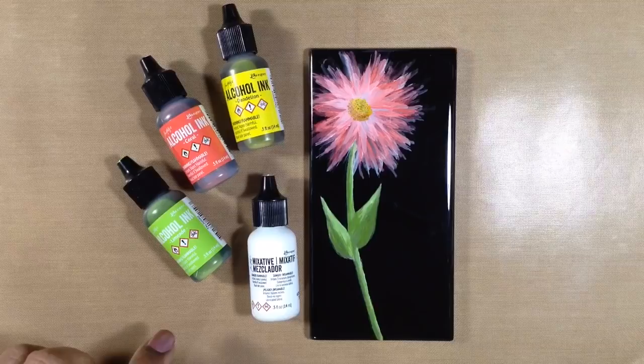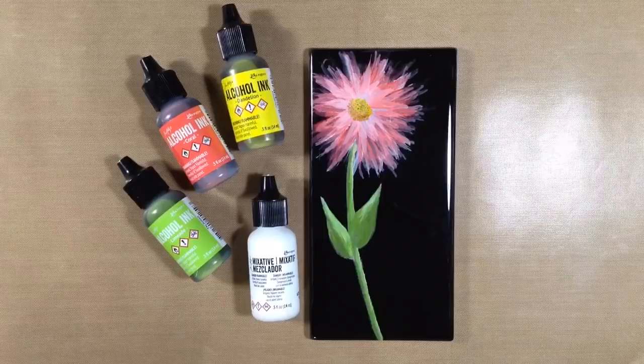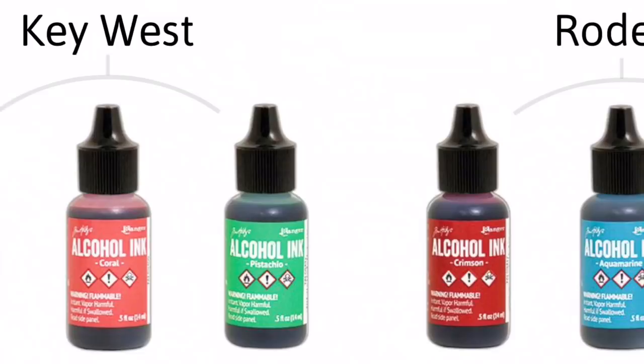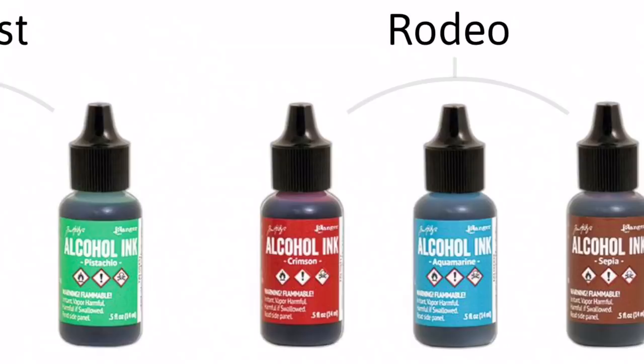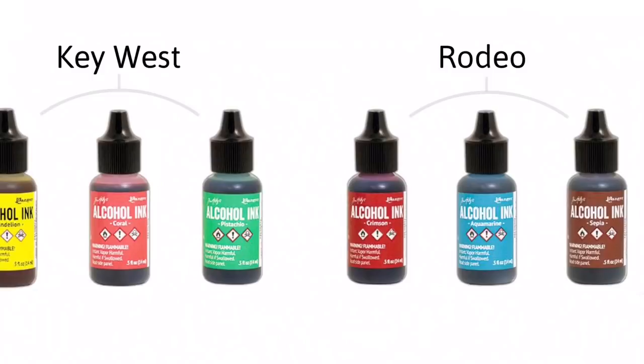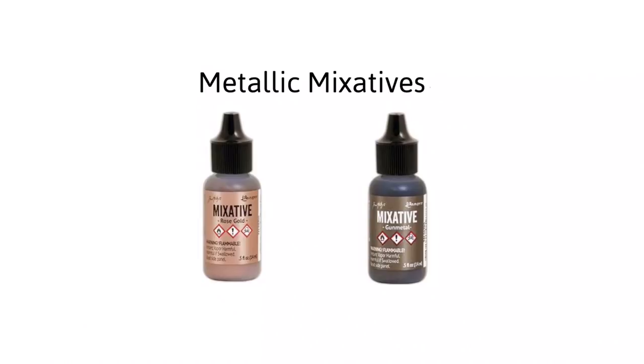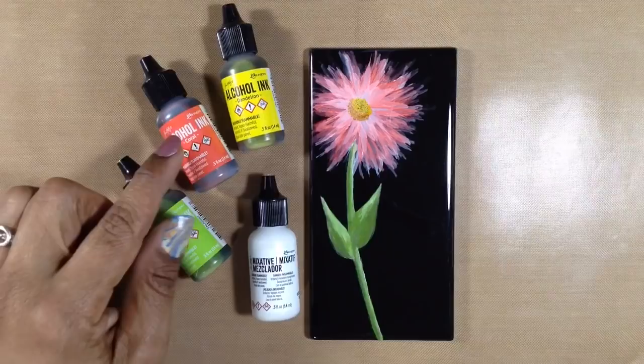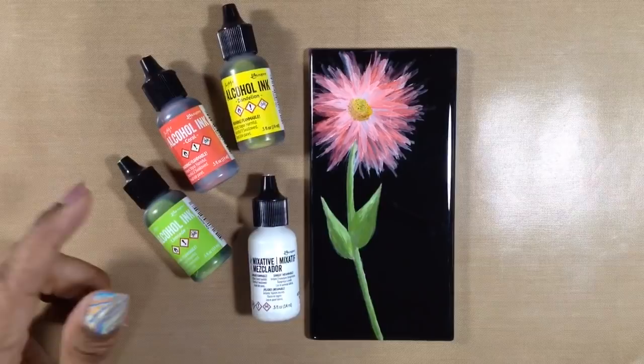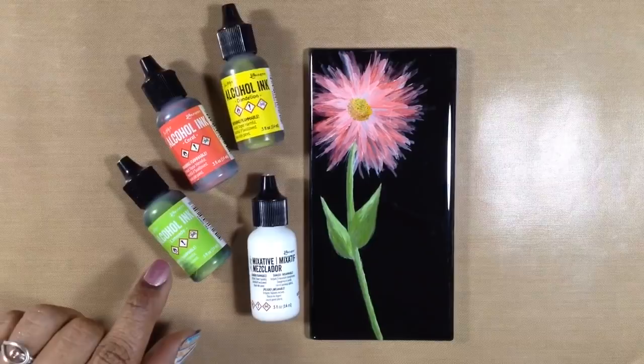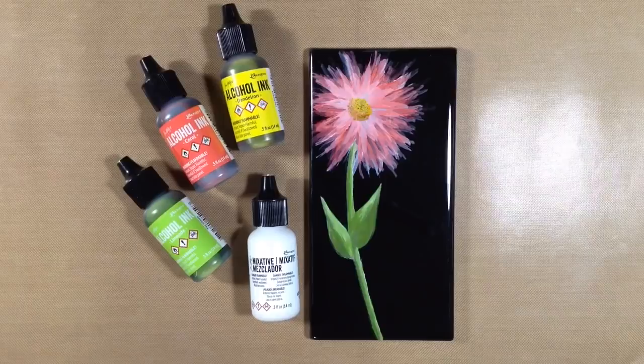We're going to be using Tim Holtz alcohol inks by Ranger for this project. Now this year, Ranger added six new colors to their line: Dandelion, Coral, and Pistachio in the Key West set, and Crimson, Aquamarine, and Sepia in the Rodeo set. You can always buy the colors individually too. Ranger also added two new metallic mixatives: rose gold and gunmetal. For this painting, I'll be using the new coral and dandelion as well as a few other colors which I'll show you along the way, including one of last year's new colors, Limeade, which is one of my new favorite greens. I'll list all the colors in the description box below.